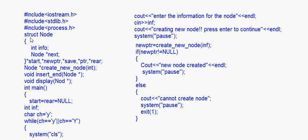There is a structure node which has one int info and a node pointer next that is pointing to the next node. The pointers we have here are start, new ptr, save ptr, and rear. In insertion at end, we have this extra pointer rear. Rear is the pointer pointing to the last node — start is pointing to the first node, rear is pointing to the last node.